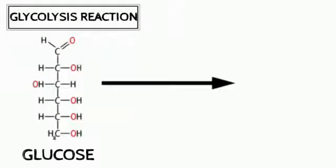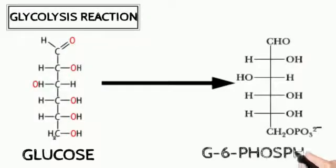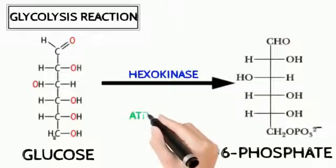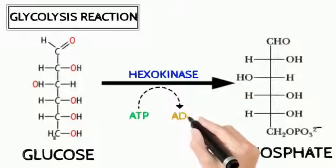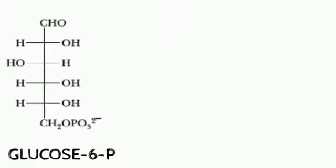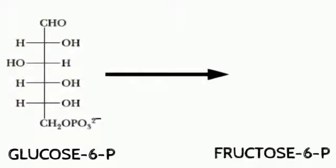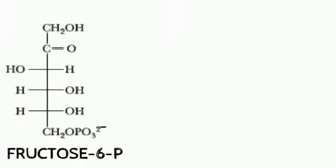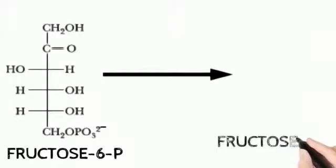The first reaction is the conversion of glucose into glucose-6-phosphate. The enzyme hexokinase is involved in this step, and phosphate from ATP is transferred to glucose, making glucose-6-phosphate. Next, glucose-6-phosphate is converted into fructose-6-phosphate by the enzyme isomerase. This is a simple rearrangement process.